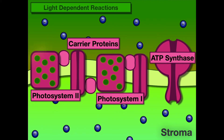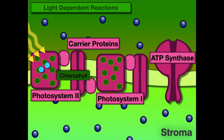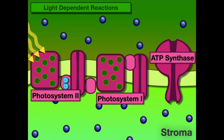Light energy is going to first excite our chlorophyll pigment. Inside Photosystem II and Photosystem I, we have chlorophyll pigment, which captures light energy and excites our electrons. Those excited electrons are going to release energy as they move down the electron transport chain. As our carrier proteins function, we're trying to create that hydrogen ion gradient that will enable ATP synthase to function.